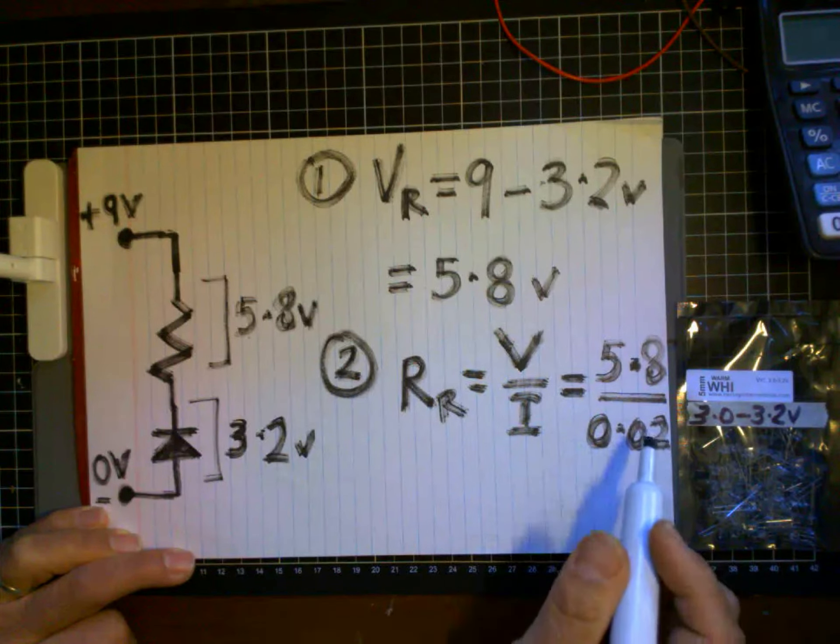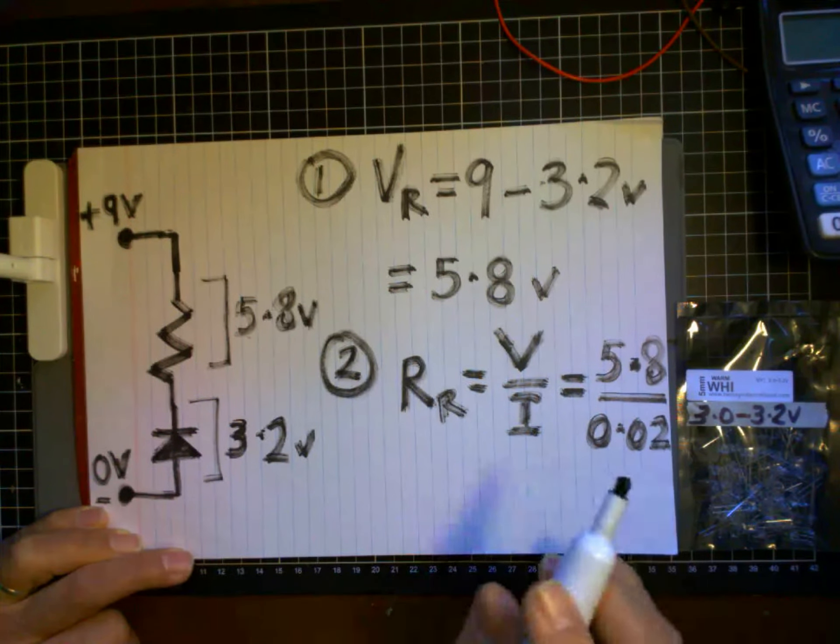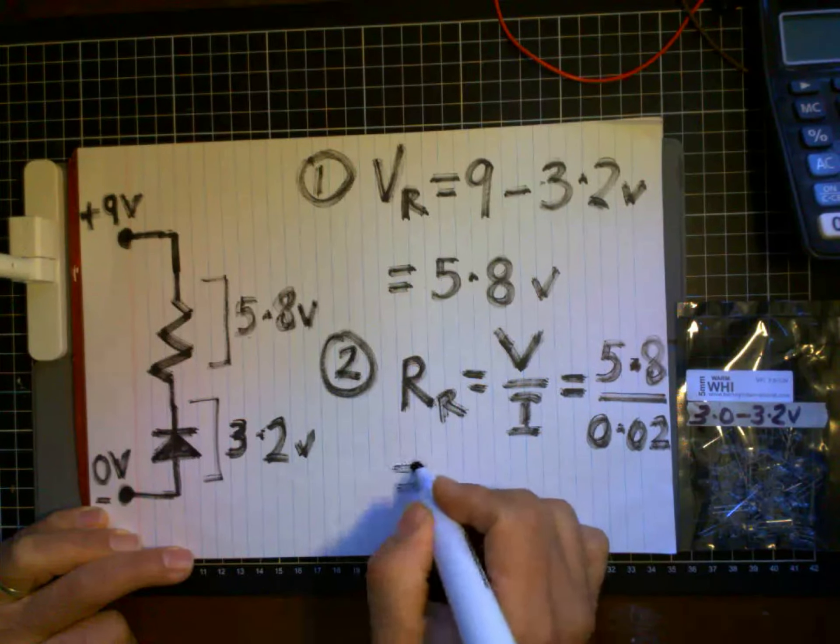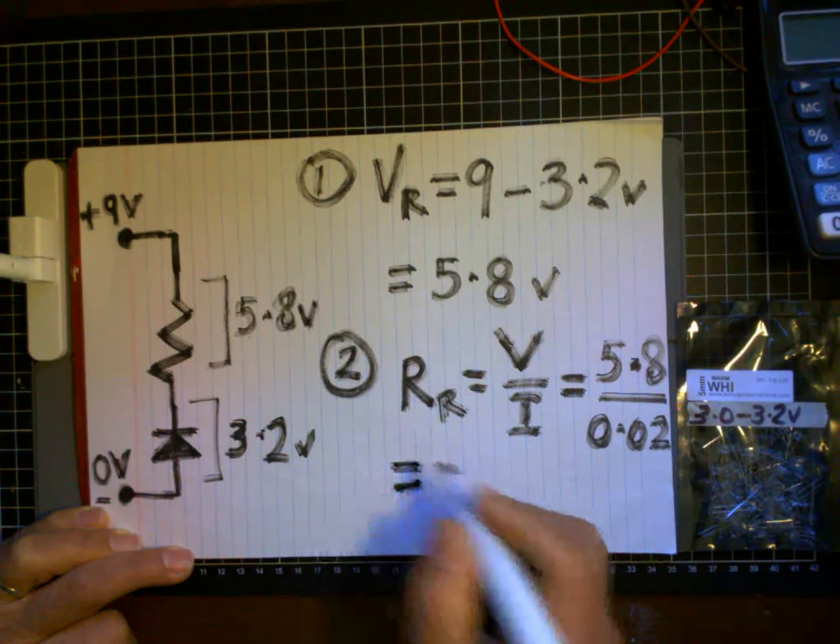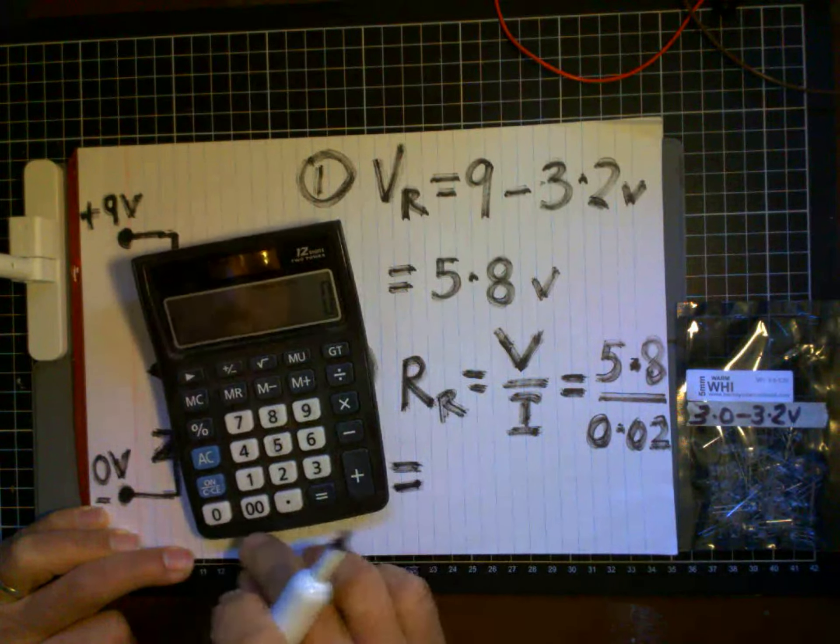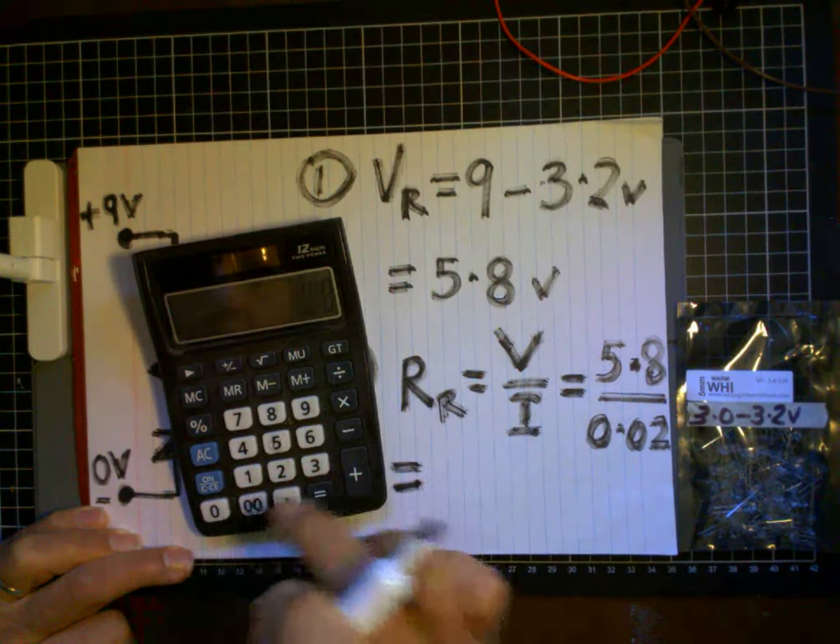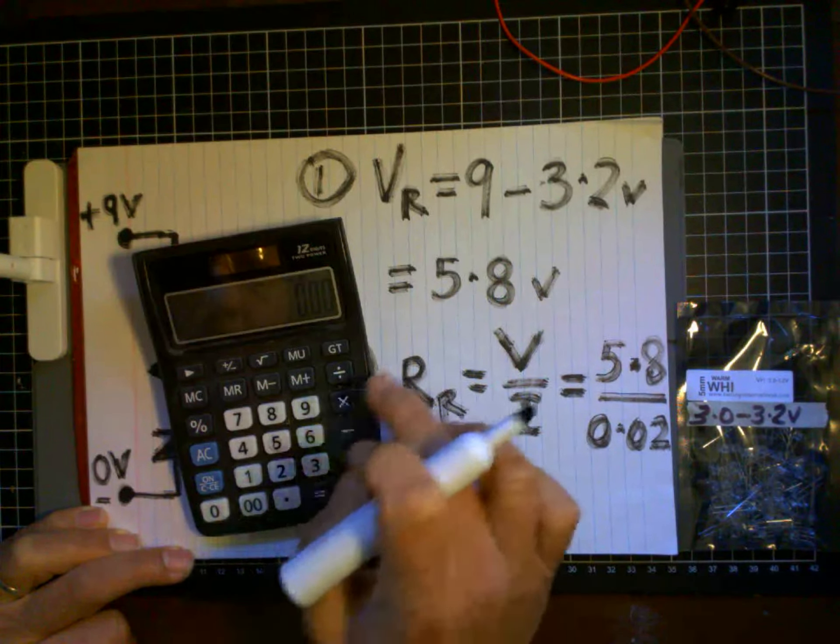So 20 milliamps and 0.02 amps are the same thing, but you have to do your calculations in full amps and full voltage, otherwise you'll get the wrong values. Now let's look at the solution to this equation. Here's my calculator.